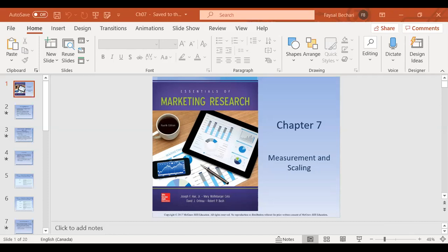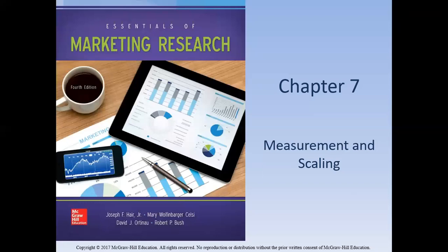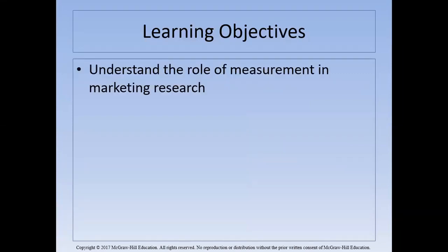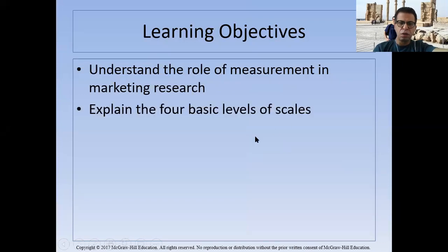When you do a business plan, people will ask: how did you come up with this result? You say you did primary research. The deeper question is: how did you come up with this primary result? In Chapter 7, the learning objective is to understand the measurement of marketing research and to explain the four basic levels of scales. You need to know the differences between them for the test.